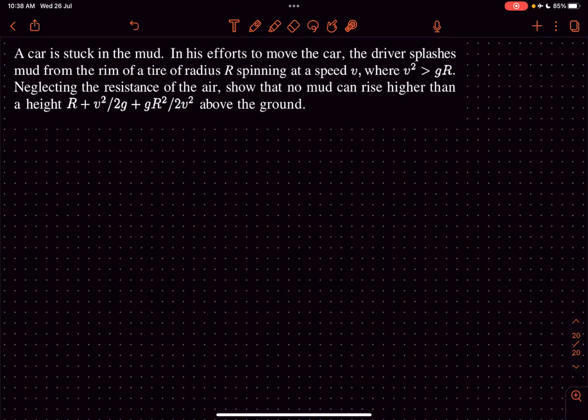Hey everyone, welcome back to my channel. In this question we have a car that is stuck in the mud. In his efforts to move the car, the driver splashes mud from the rim of the tire which was spinning at a speed v, where v² > gR. Neglecting the resistance of the air, we have to show that no mud can rise higher than a height H = v²/2g + gR²/2v².